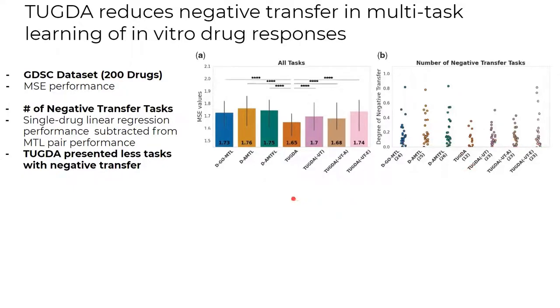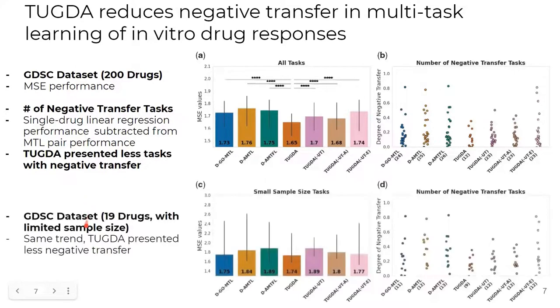We next reported results on the more challenged tasks with smaller sample sizes. In this setting, we have 19 drugs. We devised this experimental setup to reflect a more realistic scenario where drug response can be limited. Here again, TUGDA presented fewer tasks with negative transfer when compared to previous methods and TUGDA ablated versions. Taken together, these results show the importance of addressing task uncertainty in multitask learning settings and TUGDA's utility in a more realistic scenario.